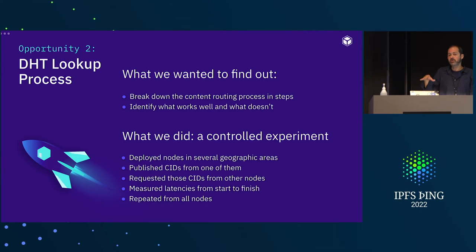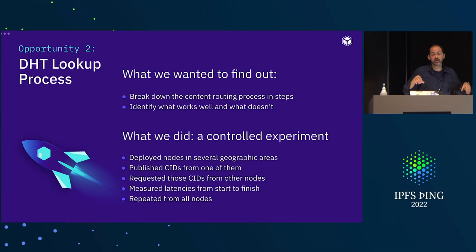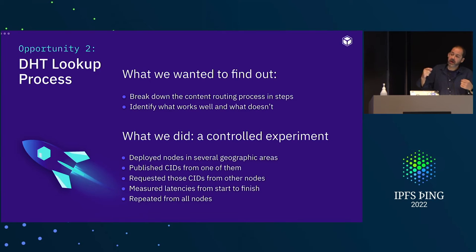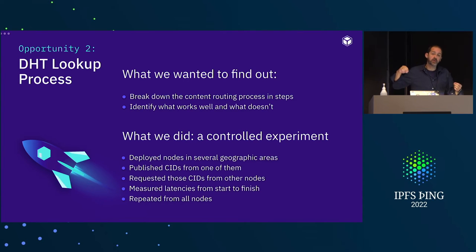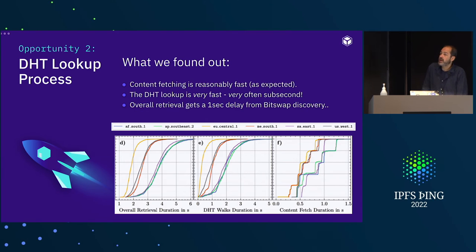We wanted to interact with the main network — not simulations or just five or ten nodes. We spun up several nodes controlled by ourselves and tracked what happens throughout the process. One node published a CID known only to itself — not some public document, so no one else had retrieved, cached, or pinned it. That CID was then communicated to the other nodes we controlled, and we started requesting it from other parts of the network, completing the full cycle of providing and then retrieving content.